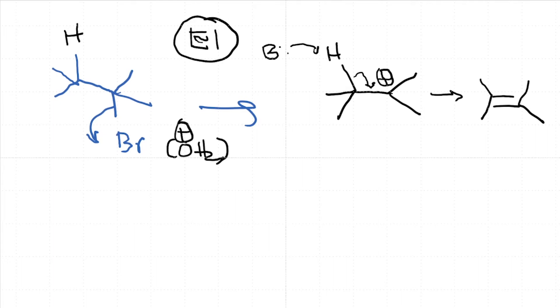We also know the other important mechanism, which is the E2. In E2 you normally use a strong base like B minus, which can be something like tertiary butoxide. It is going to abstract this hydrogen and this results in formation of the double bond and loss of bromide.